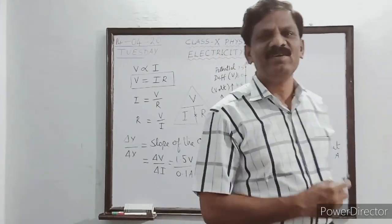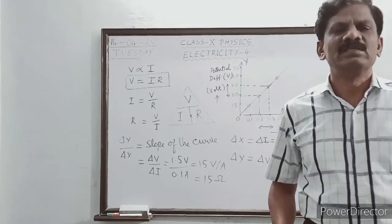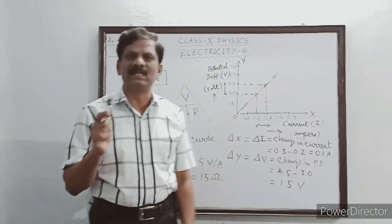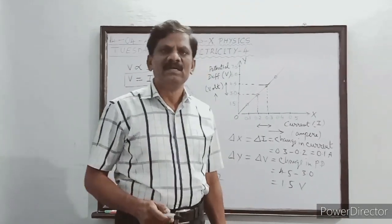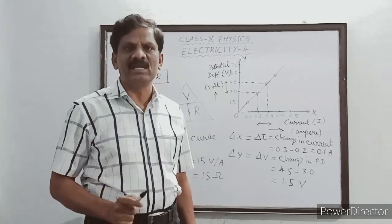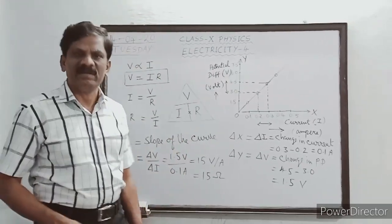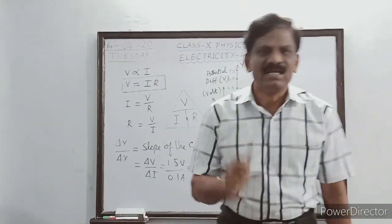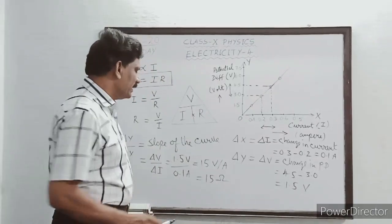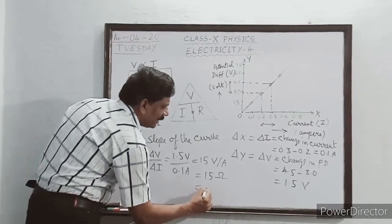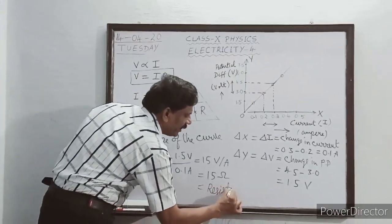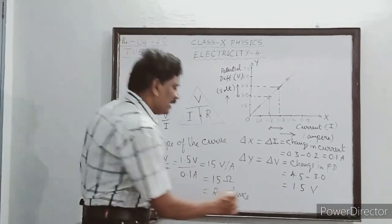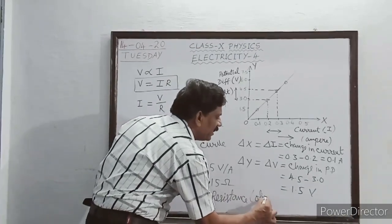How beautifully the value comes out to the same 15 ohm. We have already verified by doing the experiment using voltmeter and ammeter readings that the V by I ratio is always constant. Now from the graph also, we have verified that the ratio of V by I is always a constant. This constant is named the electrical resistance of the nichrome wire.